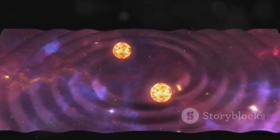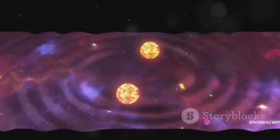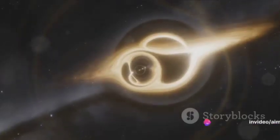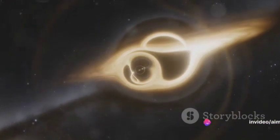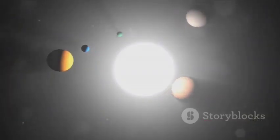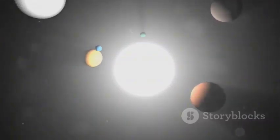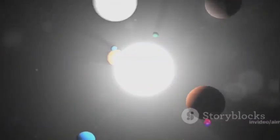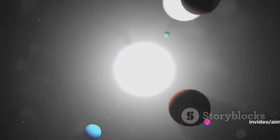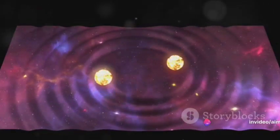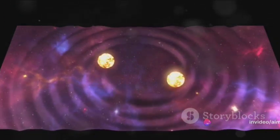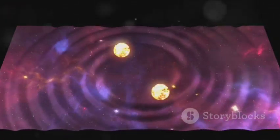But gravity's work doesn't stop there. Around this newborn star, a swirling disk of remaining debris begins to form under gravity's unyielding influence. This debris coalesces over time into planets, moons, and other celestial bodies, each one a testament to the relentless power of gravity. Gravity, the master builder, crafts stars and planets from cosmic dust and gas.